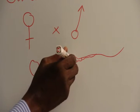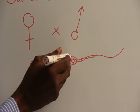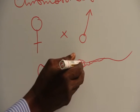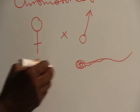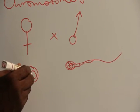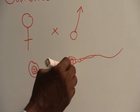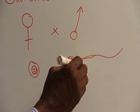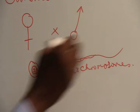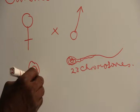A sperm carries a nucleus with 23 chromosomes and an egg carries a nucleus with also 23 chromosomes.